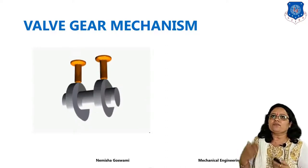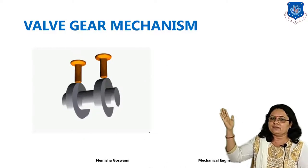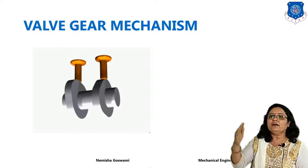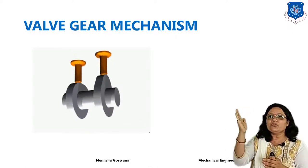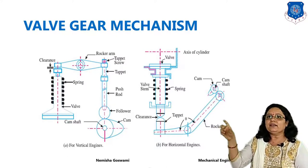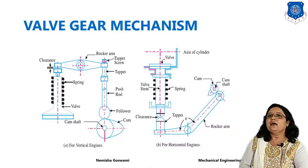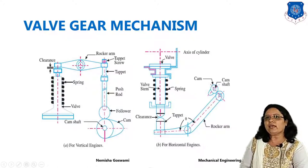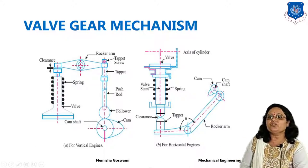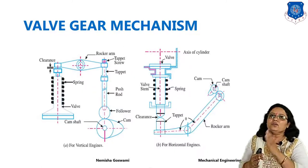So just revise the basic fundamentals of the valve gear mechanism. The valve gear mechanism is generally based on cam and follower motion. As you can see in this diagram, the cam gives motion to the follower, which will jump, and that motion is transferred to the spring. There are two types of valve gear mechanism — for vertical engines and for horizontal engines.